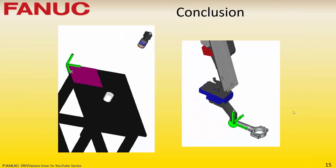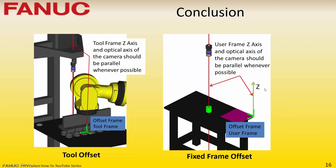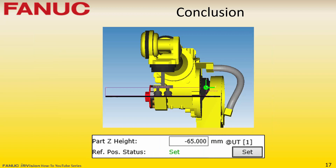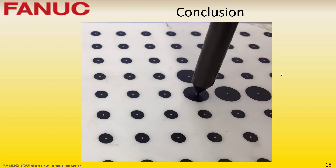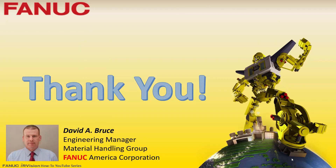In conclusion, the key factors to remember are: the offset frame user frame or tool frame should represent the plane in which the parts are going to move around. Whenever possible, the camera should be positioned such that its optical axis is parallel with the Z axis of the offset frame. The part Z height can be a negative value if the part feature is located in the negative Z direction of the offset frame. An inaccurate part Z height will cause issues with overall vision-guided performance. Thank you very much for watching this IRVision tutorial on how to properly set the part Z height.